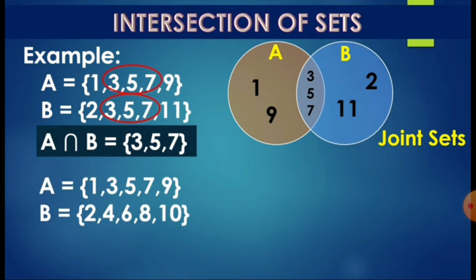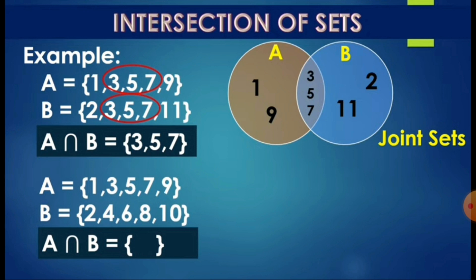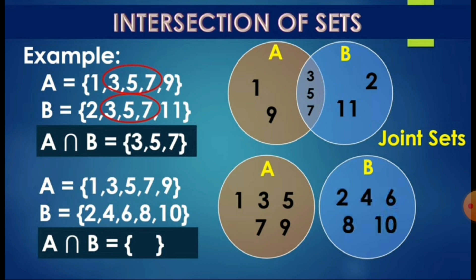Let's have another example. Set A has elements 1, 3, 5, 7, 9. Set B has 2, 4, 6, 8, 10. Check if they have common elements. We find no common elements — they have none. So the intersection of A and B is a null set or empty set. When we draw the Venn diagram, the circles should not intersect; they are separate. This is called disjoint sets.